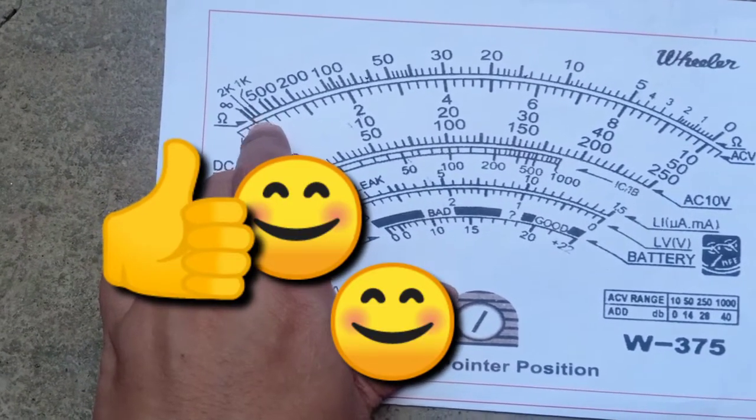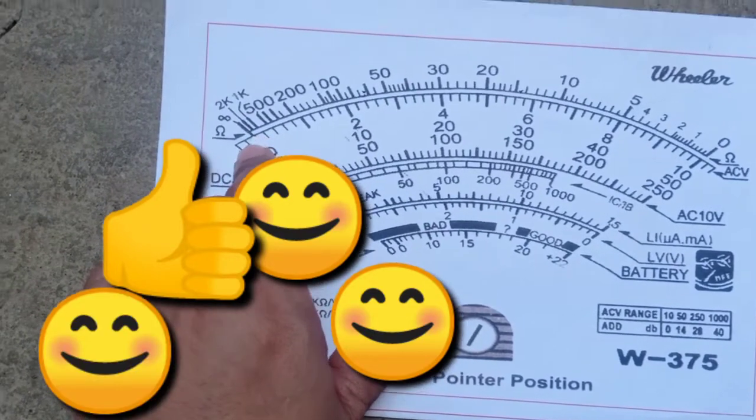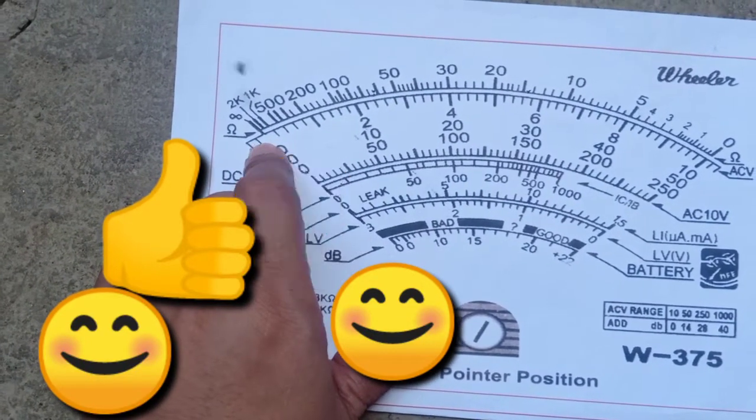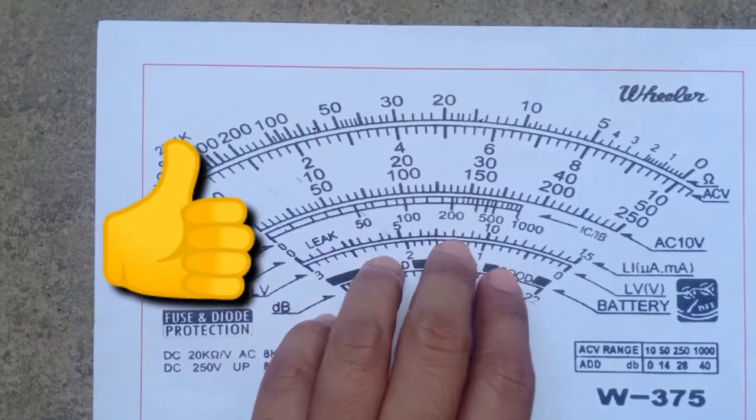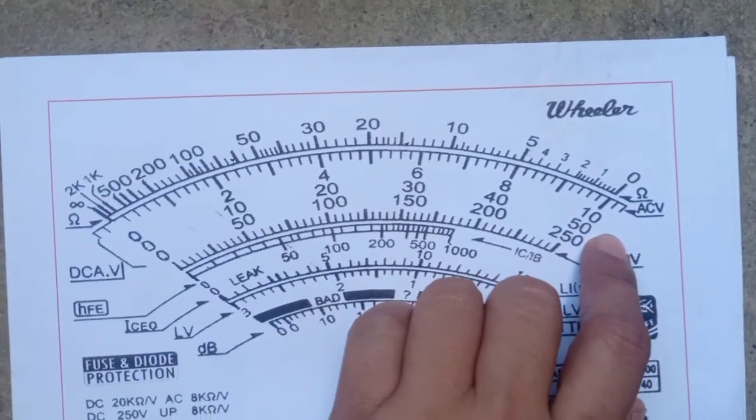1k means 1,000. 2k means 2,000. Infinite means yung value niya is hindi mo na siya ma-read. Okay? Let's have a recap again.